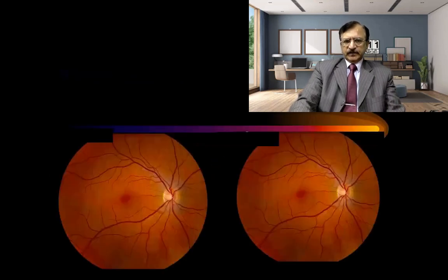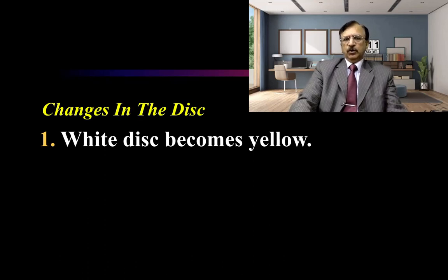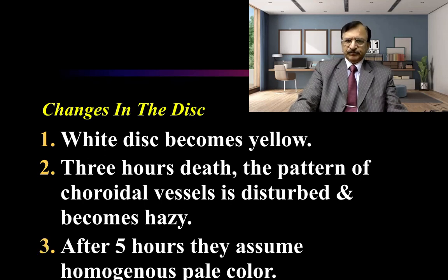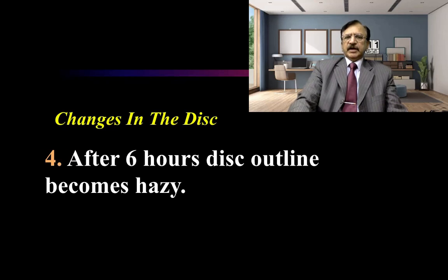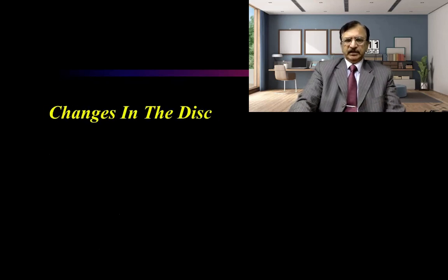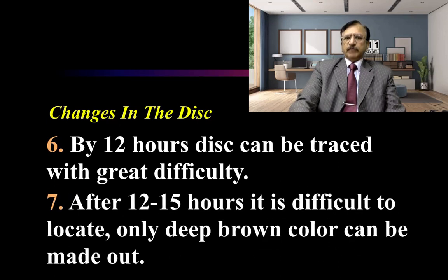Now the changes in the optic disc. Normally the disc appears white and then becomes yellow. Three hours after death, the pattern of the disc vessels is disturbed and they become hazy. After five hours, they assume a homogeneous pale color. After six hours, the disc outline becomes hazy, and after seven to twelve hours the disc outline is blurred and you cannot distinguish the disc from the rest of the retina. By twelve hours, the disc can be traced only with great difficulty, and after twelve to fifteen hours it is difficult to locate — only a deep brown color can be made out.